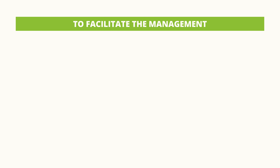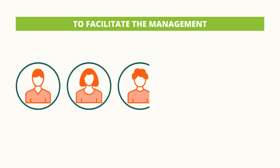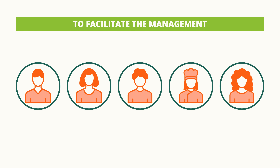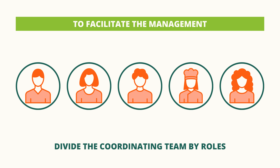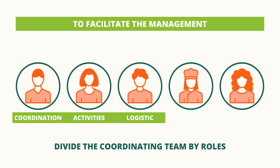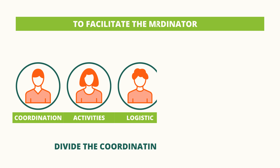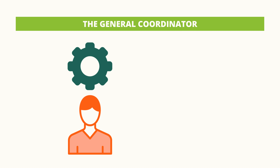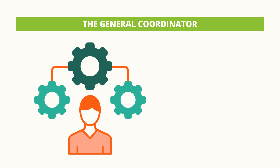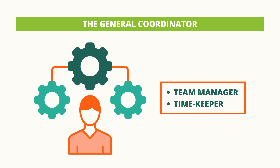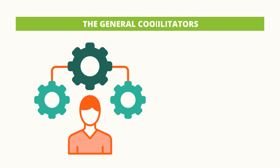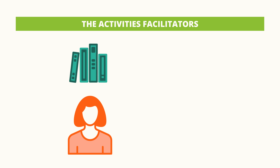To facilitate the management of the program, it's recommended to divide the coordinating team by roles. Clarifying the role of each person will help to divide the tasks more easily. Here you have examples of different roles: the general coordinator ensures that the team follows the structure of the program, the timekeeper, and the activities facilitators are in charge of implementing and facilitating the activities of the program.